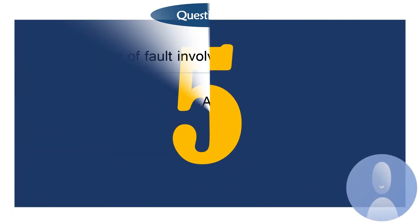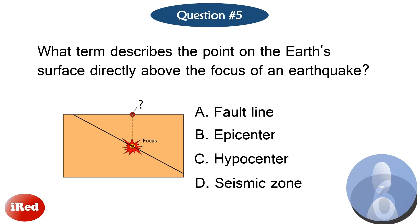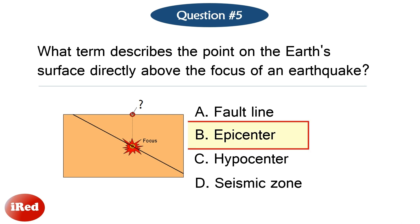Question number five. What term describes the point on the Earth's surface directly above the focus of an earthquake? The correct answer is letter B: epicenter.